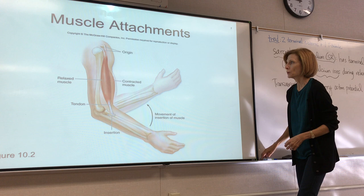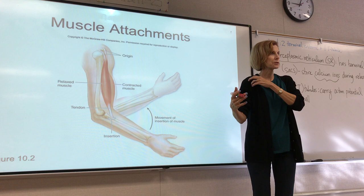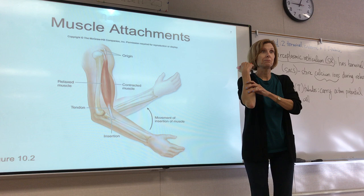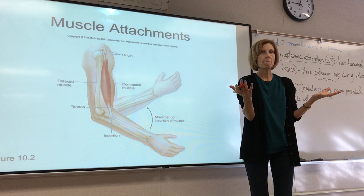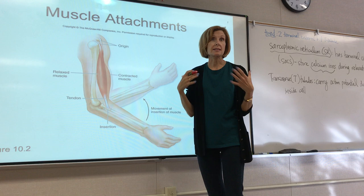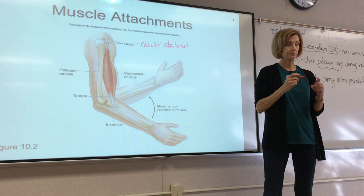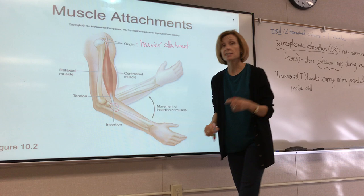When this muscle contracts, what body part moves? Is it going to pull the shoulder down toward the forearm, or pull the forearm up? It's going to move the forearm because of weight — the shoulder is heavier, the forearm is lighter. The origin of the muscle is the heavier attachment, and because it's heavier, it usually does not move during contraction — it remains stationary. The insertion is the lighter attachment.